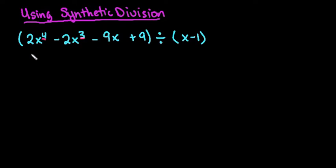It's missing the x squared term, so you always want to make sure that you watch for that and ask yourself, does it go down in descending order of exponents? If you are missing something, you do have to put a zero in there because you really have zero x squared.